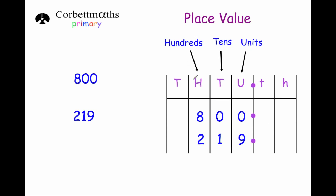Let's look at our next column, which is 100s. The number 800 has just got 8 hundreds, so we write 8 in the 100s column, 0 in the 10s column and 0 in the units column. The number 219 would have 2 hundreds, 1 lot of 10, and 9 units. So we write a 2 in the 100s column, a 1 in the 10s column and a 9 in the units column.